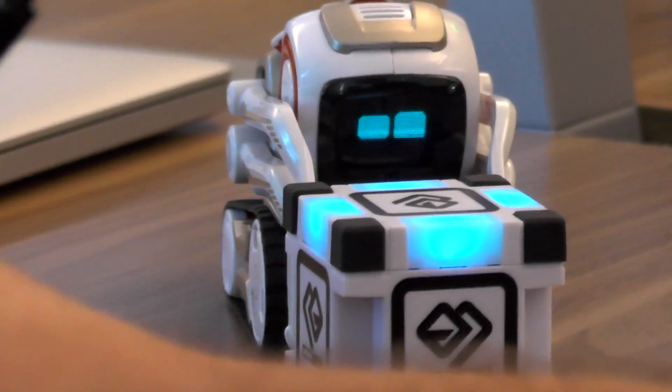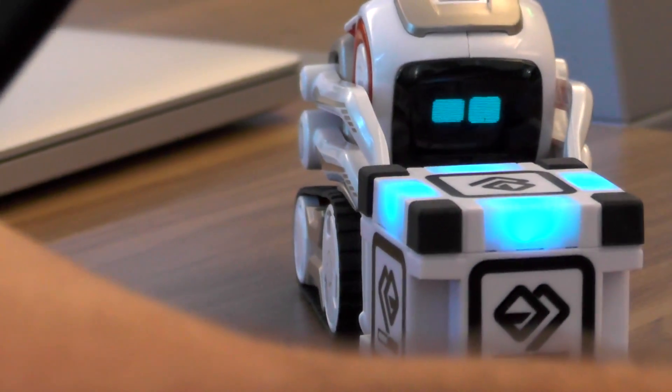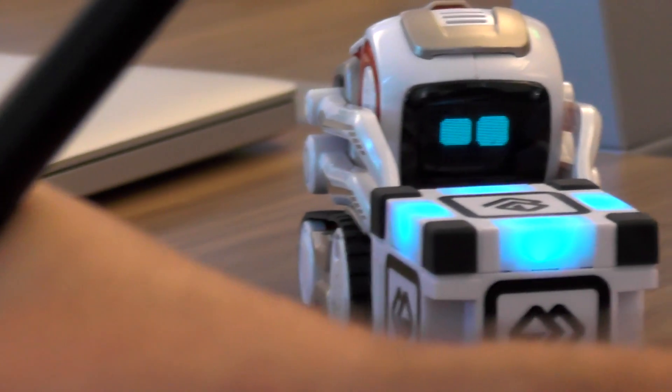In terms of how it works, there's an app that goes with Cosmo and he also has a camera. Let me talk you through the different elements. First, there's Cosmo itself—he's fairly small, about hamster size.